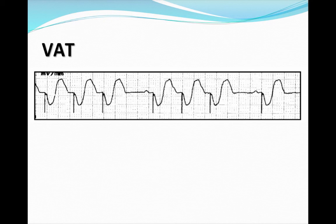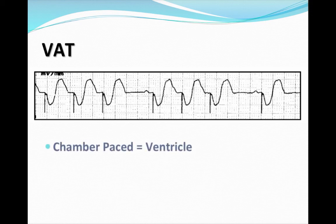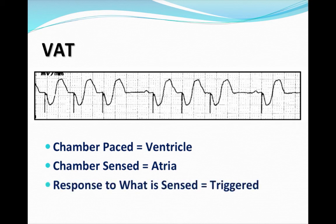VAT — the chamber being paced is the ventricle, the chamber being sensed is the atria, and the response is triggered. Here you can see pacer spike and wide QRS times three complexes, a long pause, then a P wave being sensed, then a pacer spike followed by wide QRS again times three beats — and then the same pattern repeats.